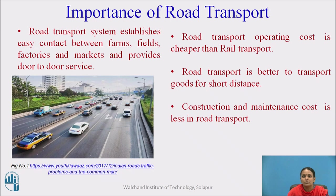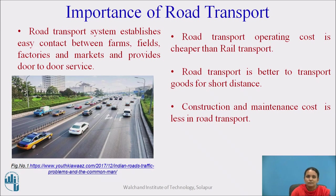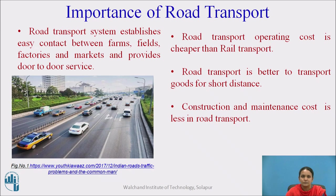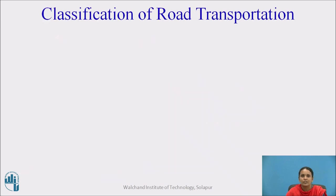Road transport operating cost is cheaper than rail transport. The road transport is easier and cheaper than other transportation systems — that is road, railways, waterways, and airways. The construction and maintenance of road transport is also easier compared to other transportation systems.